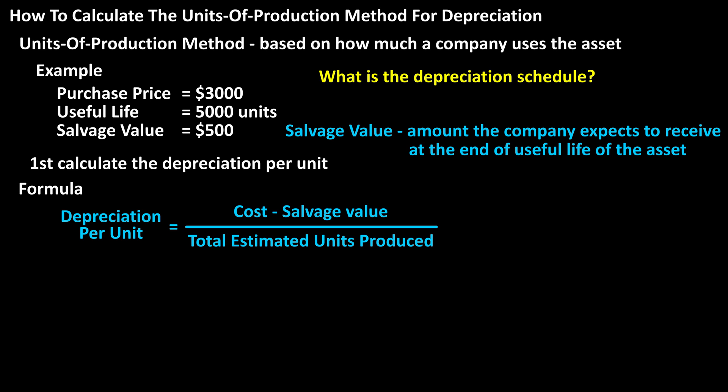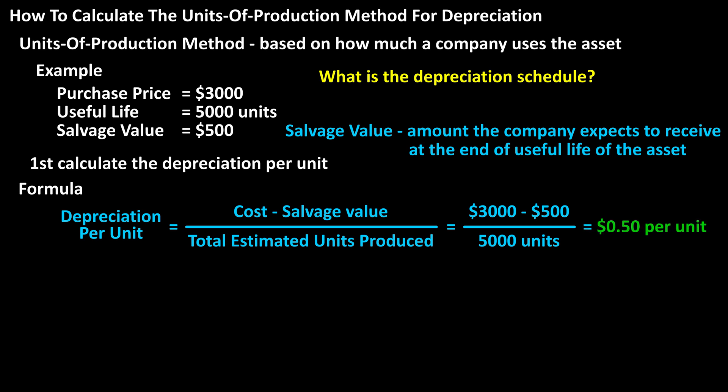From our example, plugging into the formula, we have $3,000 — the cost of the asset — minus $500, the salvage value, divided by 5,000, the total estimated units produced over the useful life of the asset. This calculates to $0.50 as the depreciation per unit.